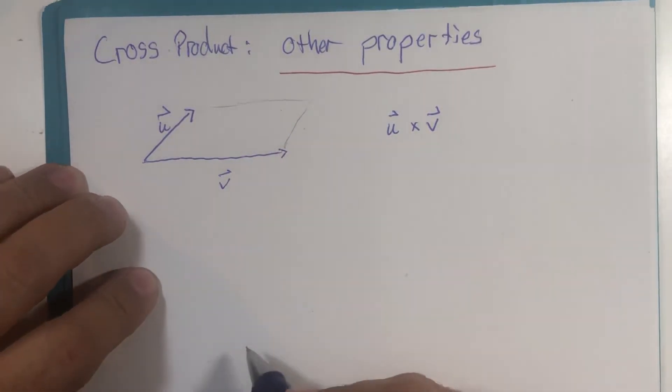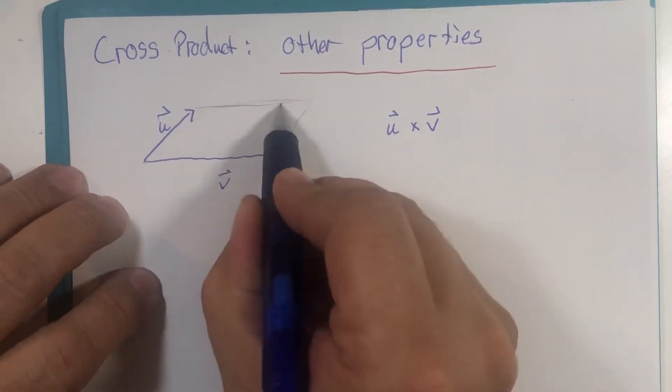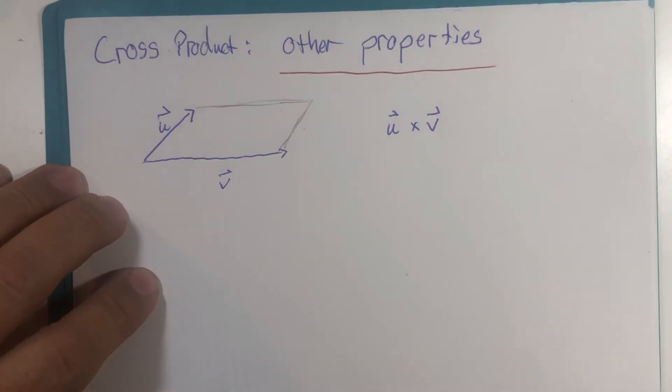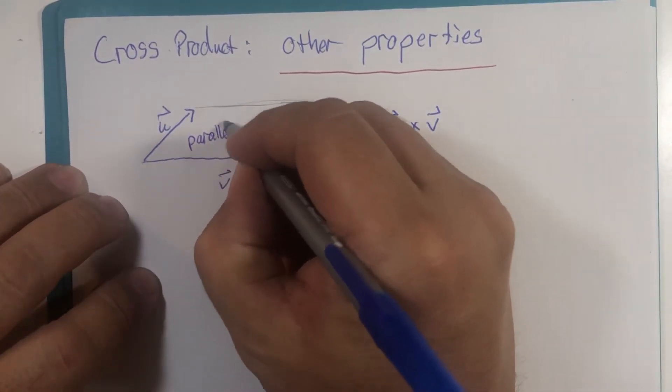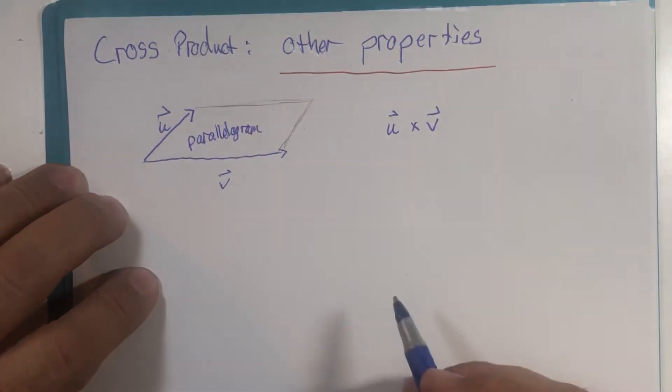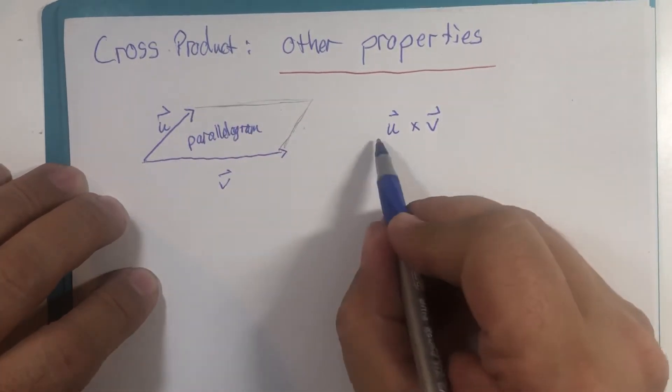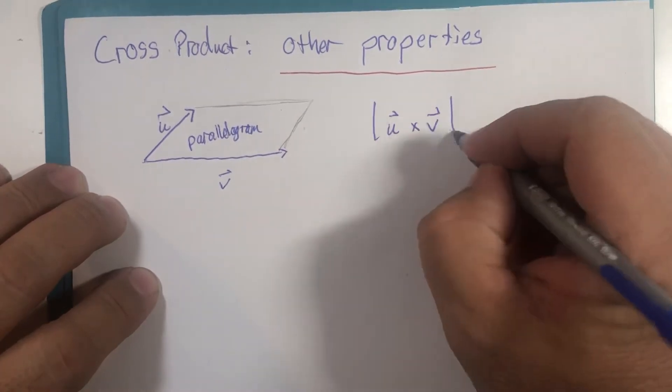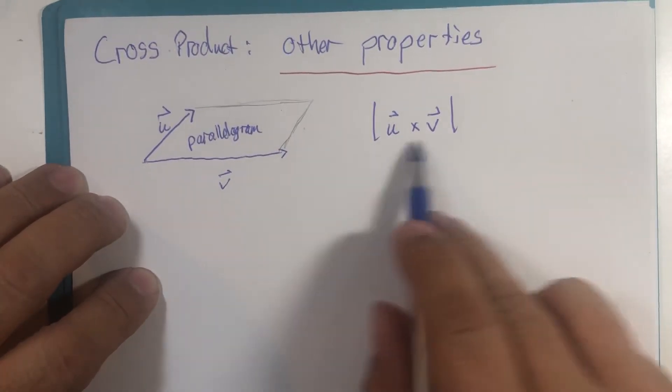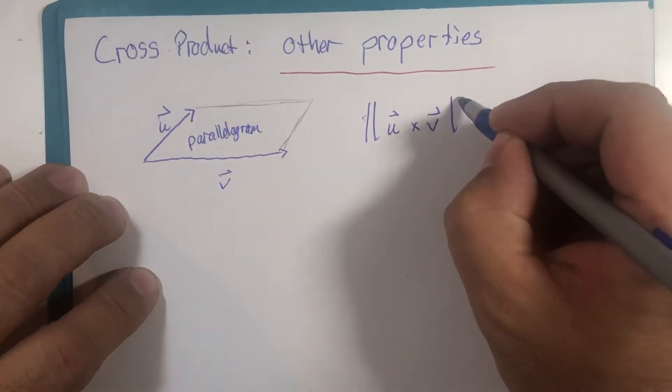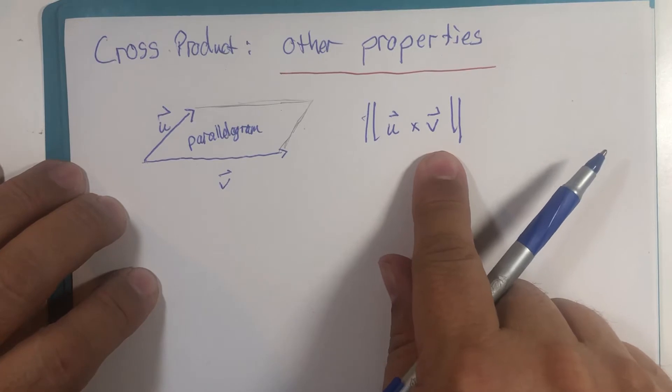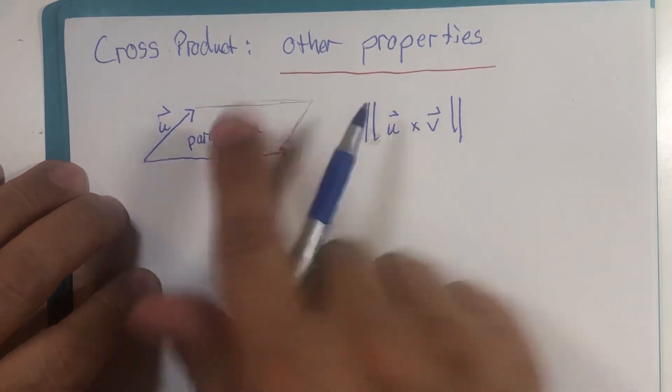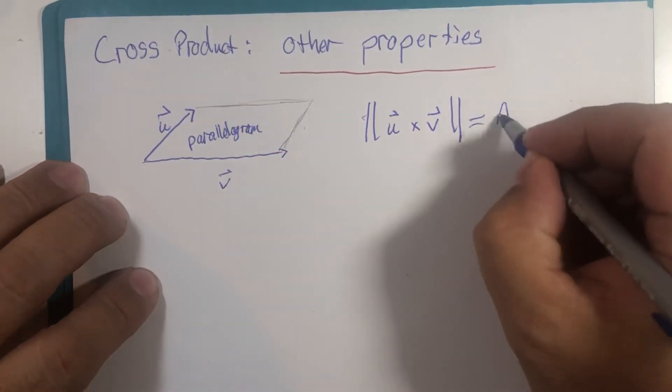But if you were to take this set of vectors and build the parallelogram, it turns out that the magnitude of that vector you made—remember I use the single bars but you can use the doubles—that the magnitude of that cross product is actually equivalent to the area of this parallelogram.